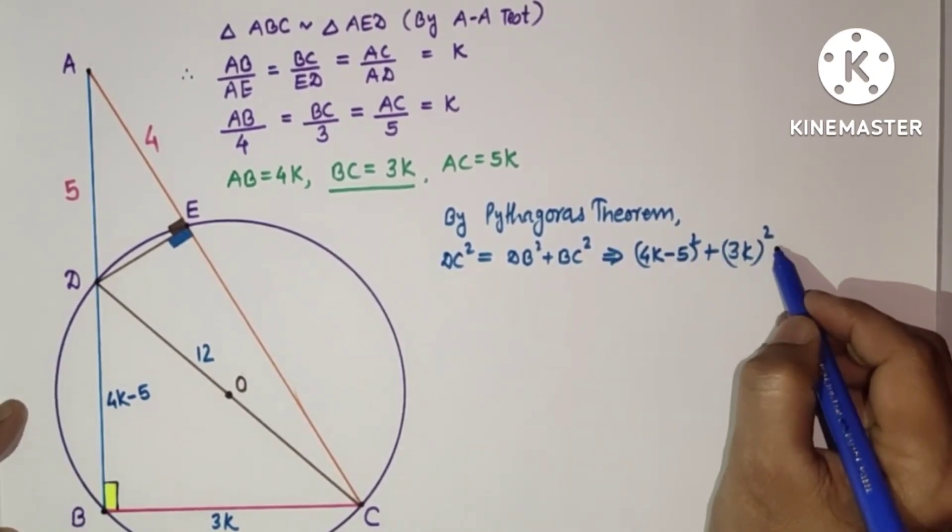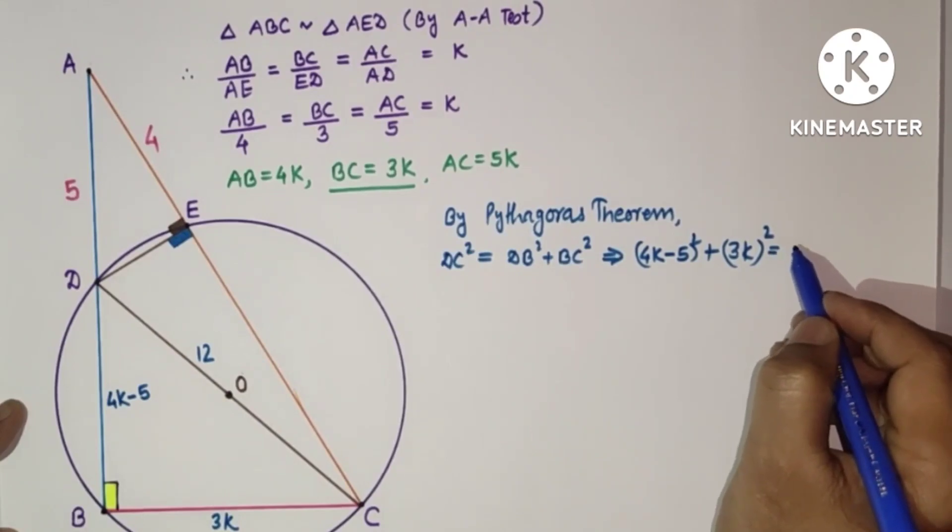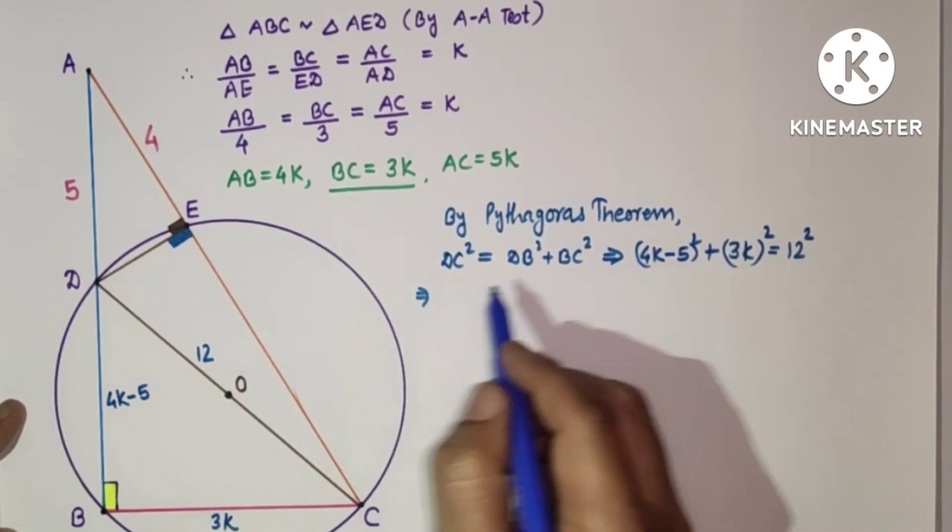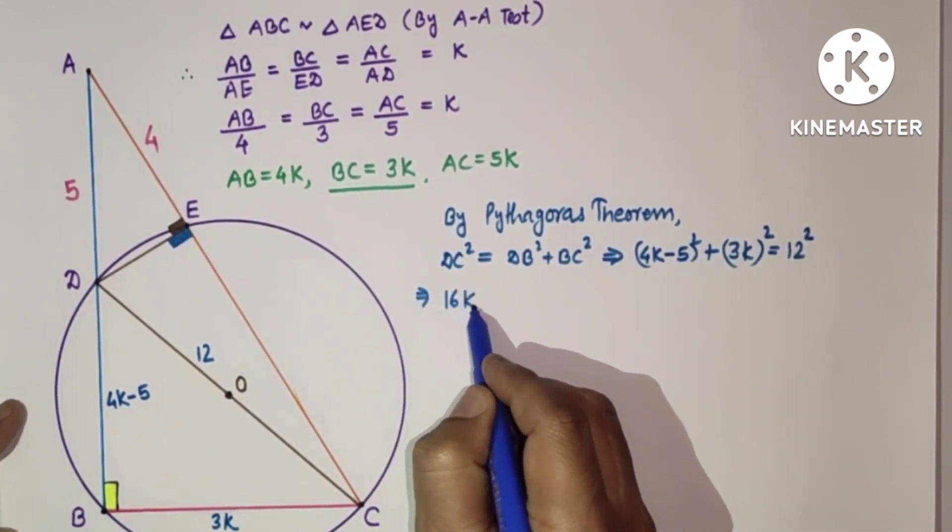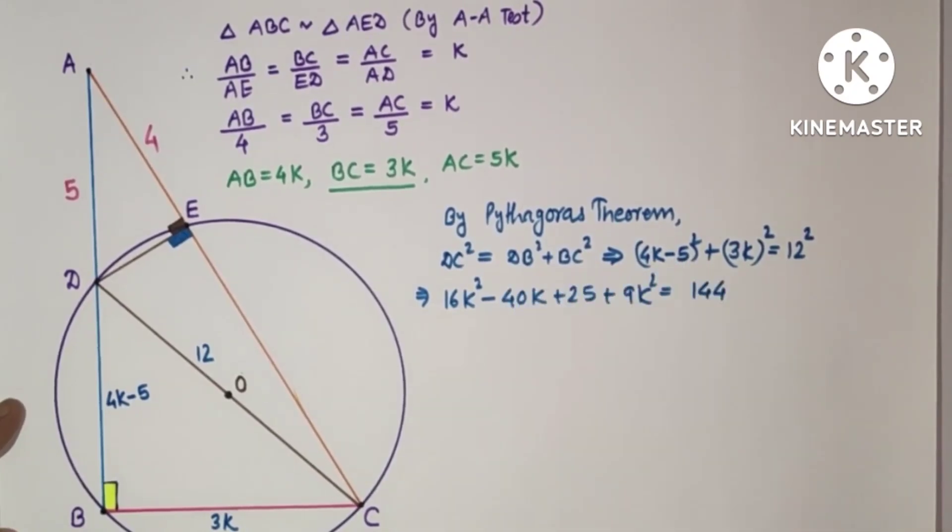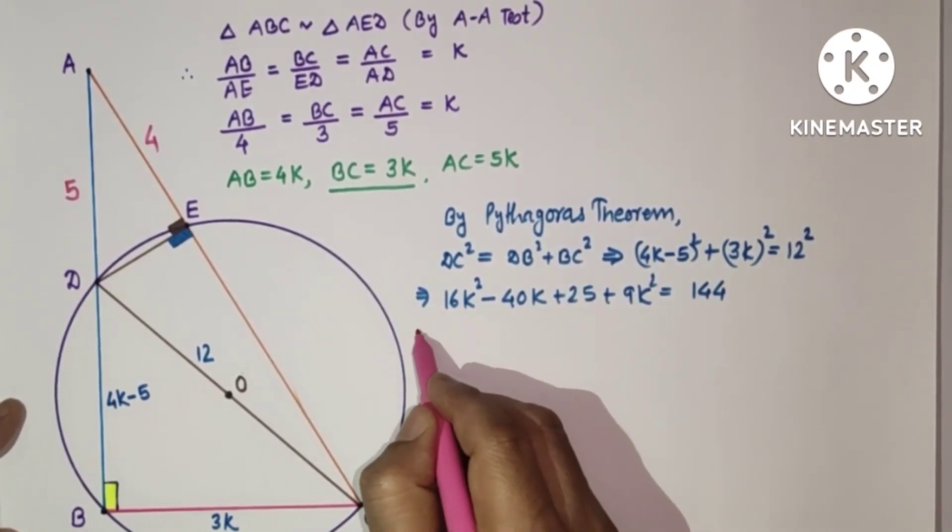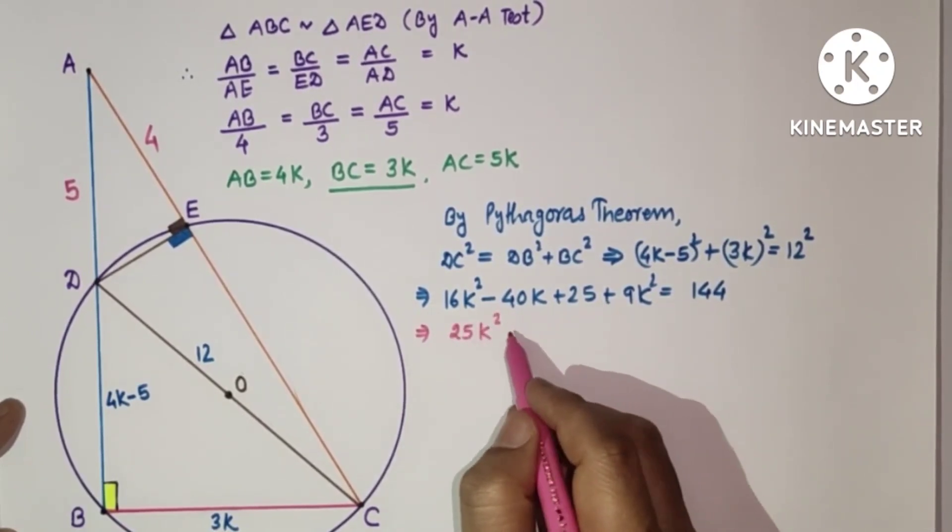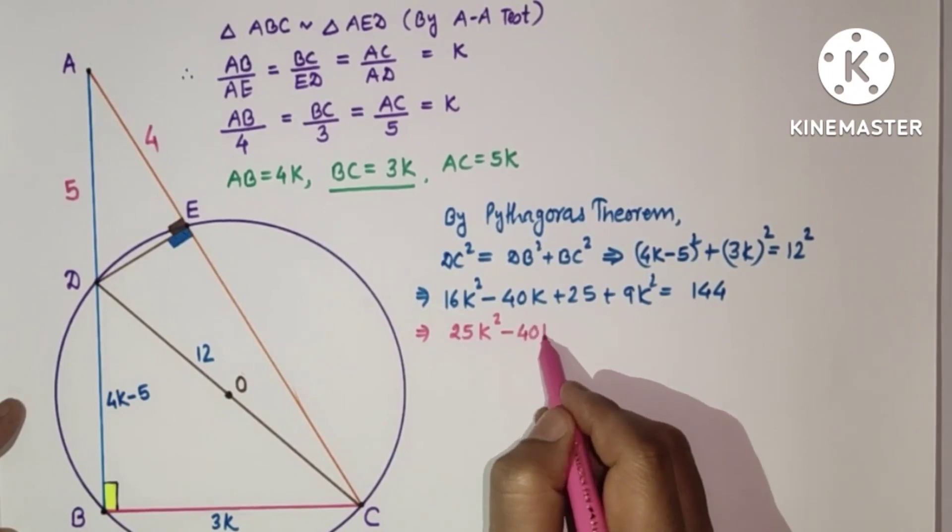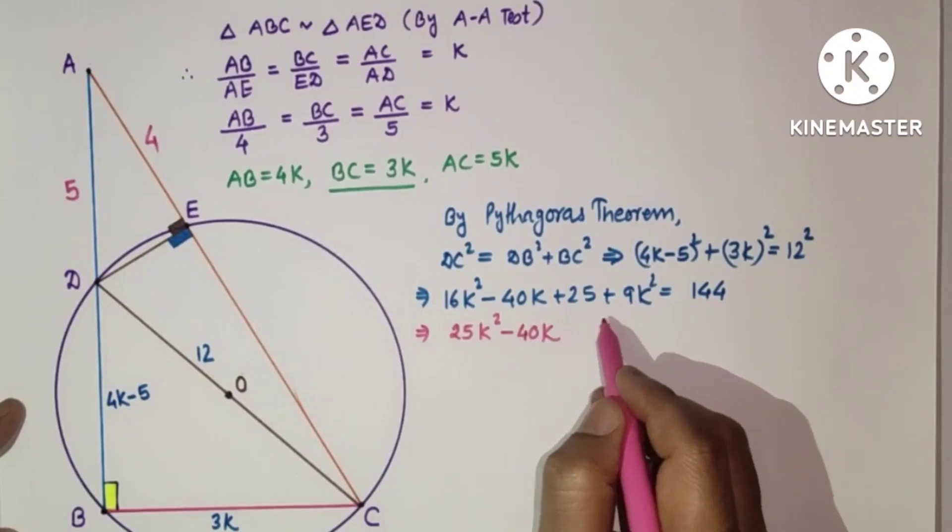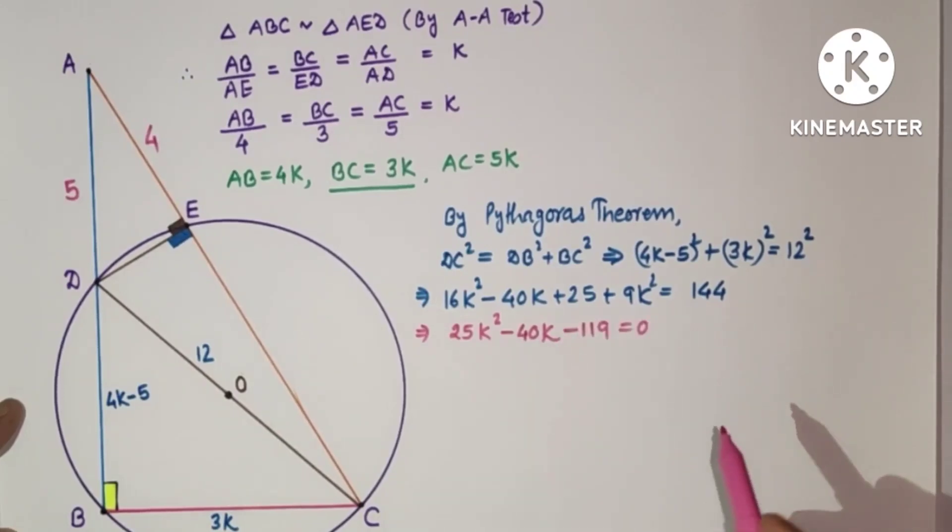Which equals DC square, and DC is 12, so 144. After simplification it will be 25K square minus 40K. If we subtract 144, we will get 119 negative. So this is of the type AX square plus BX plus C equals 0.